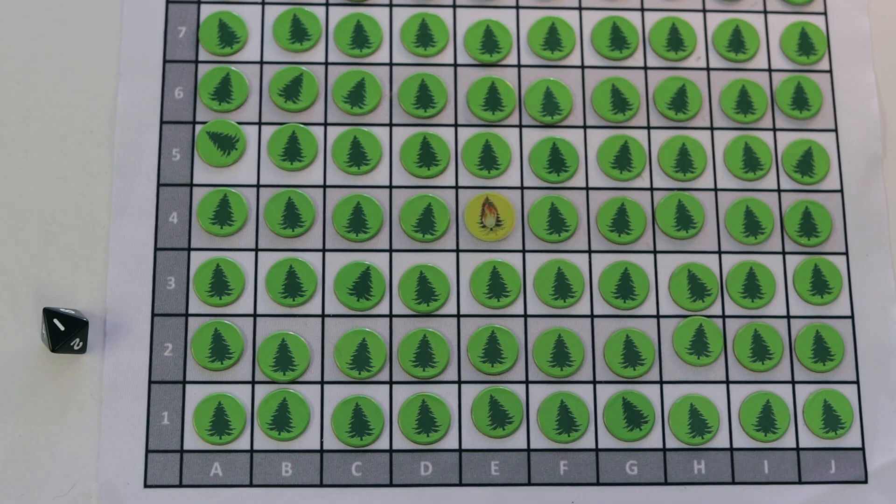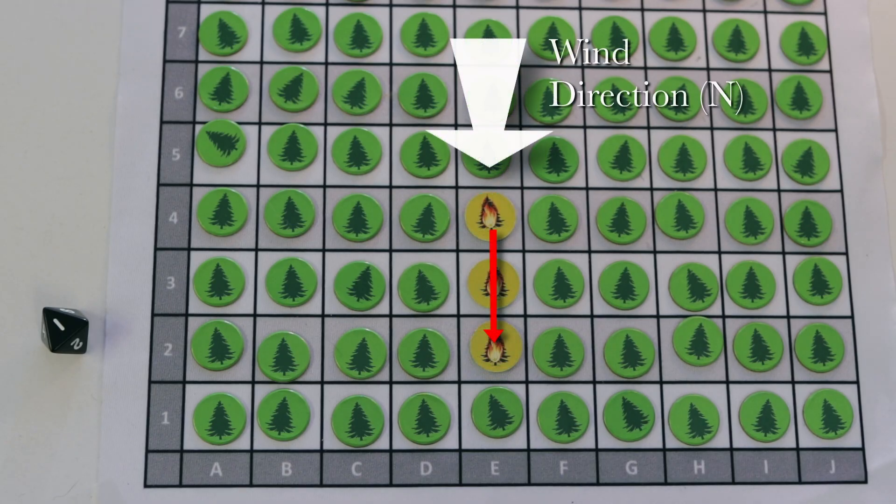When a tree catches fire, two squares to the south, one square each to the southeast and southwest cast fire and no squares to the north can catch fire.